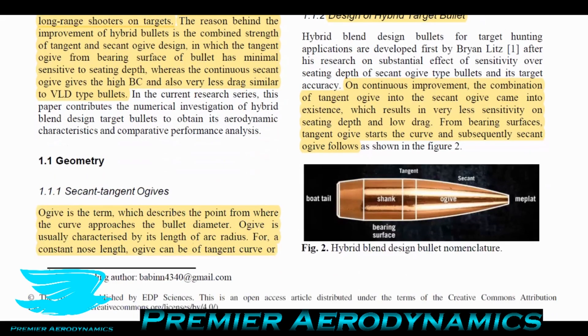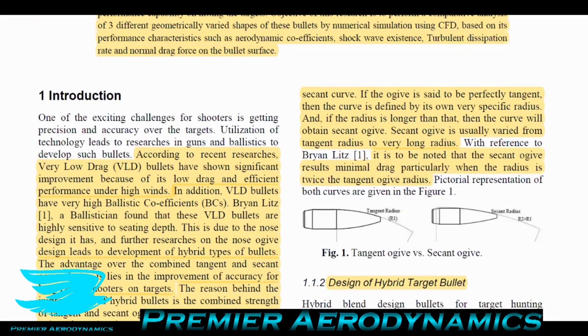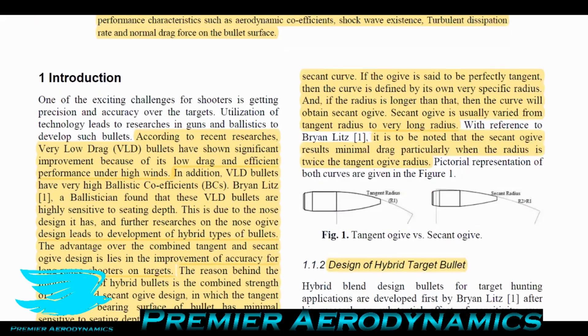Ogive is a term which describes a point from where the curve approaches the bullet diameter - where the curve starts. It's usually characterized by its length of arc radius. For a constant nose length, an ogive can be a tangent curve or secant curve. If the ogive is perfectly tangent, the curve is defined by its very own specific radius. If the radius is longer than that, you get a secant ogive.